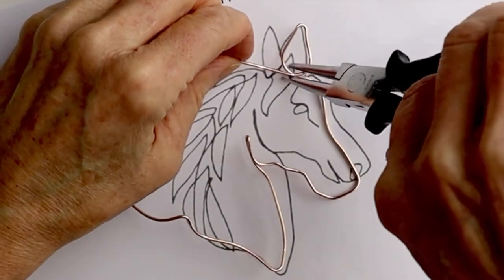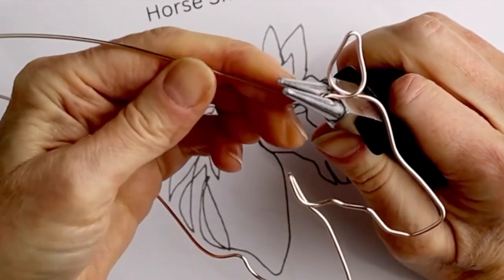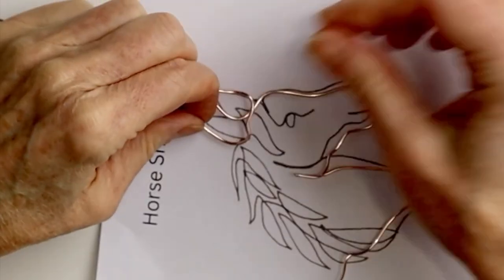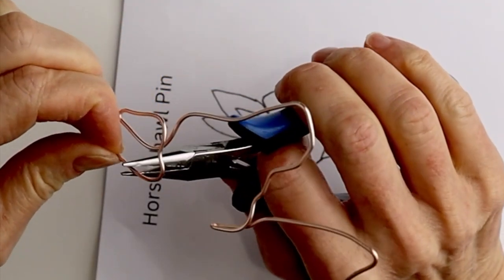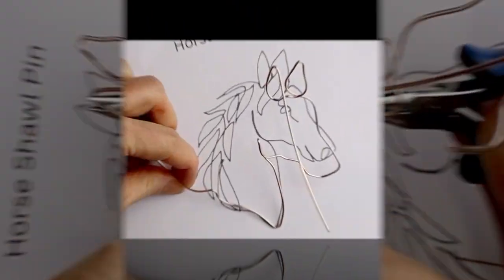Now place it back on, hold it with the pliers, do your bends, and bend this one up. Back on the template, and then flat pliers to do the top bend.